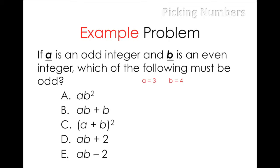Now all that's left to do is to go to the answer choices and plug in the number three anytime I see A and the number four anytime I see B. From my work, it's clear to see that there's only one choice that gives me an odd number. Therefore, C is the correct response.